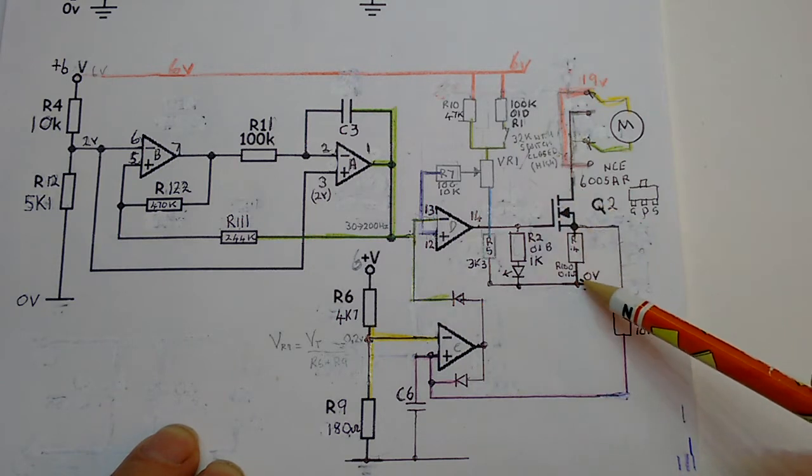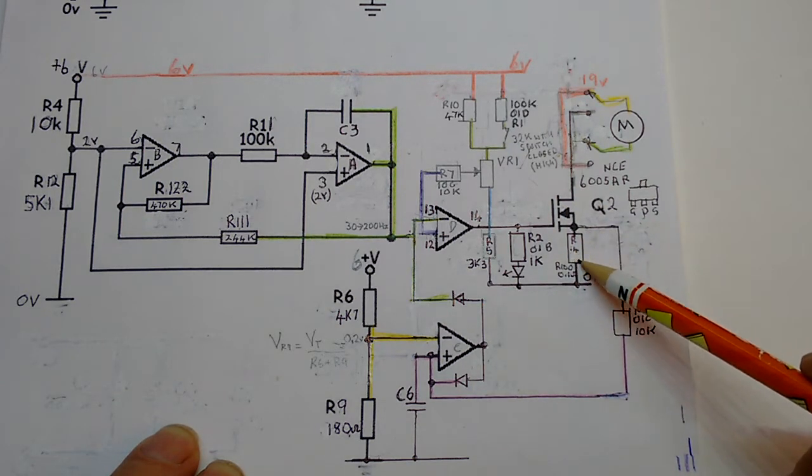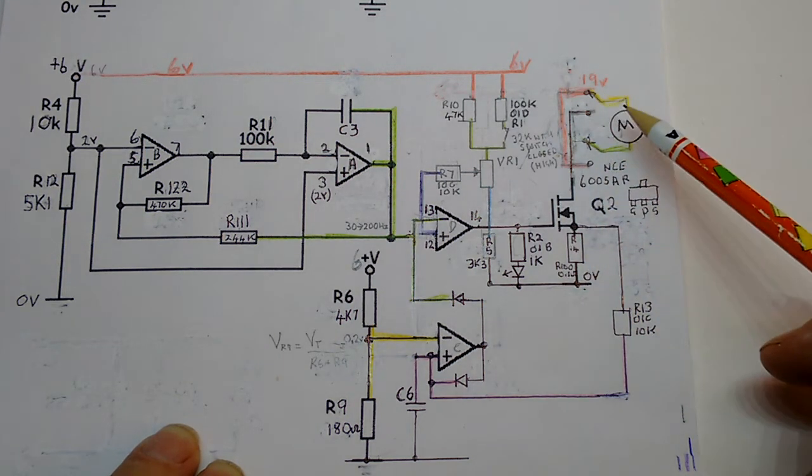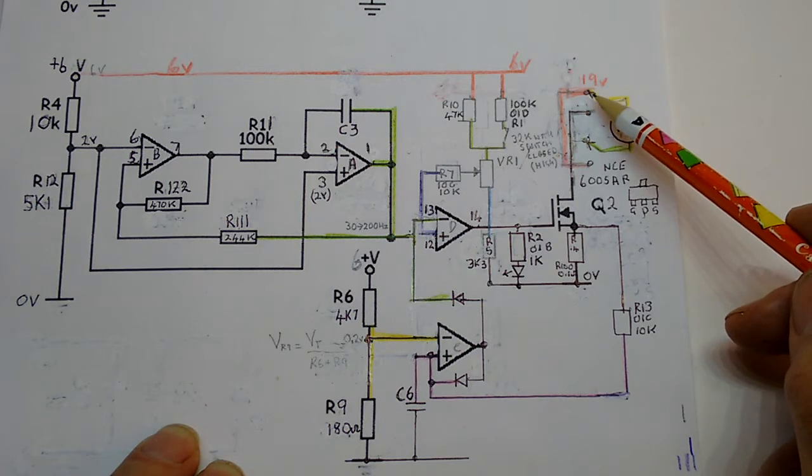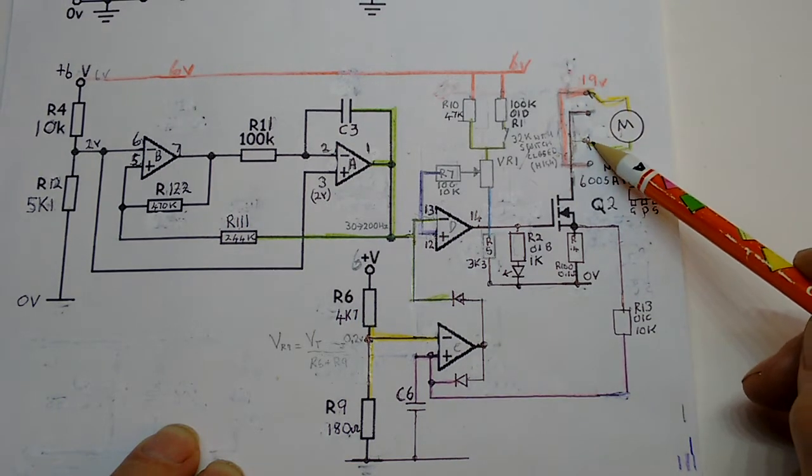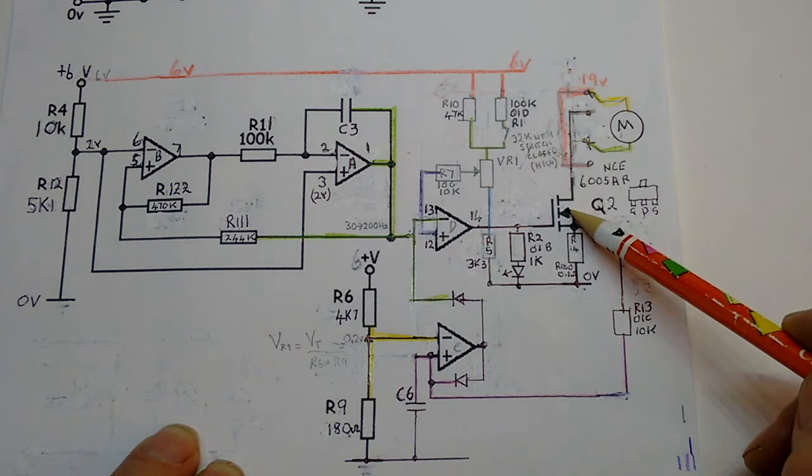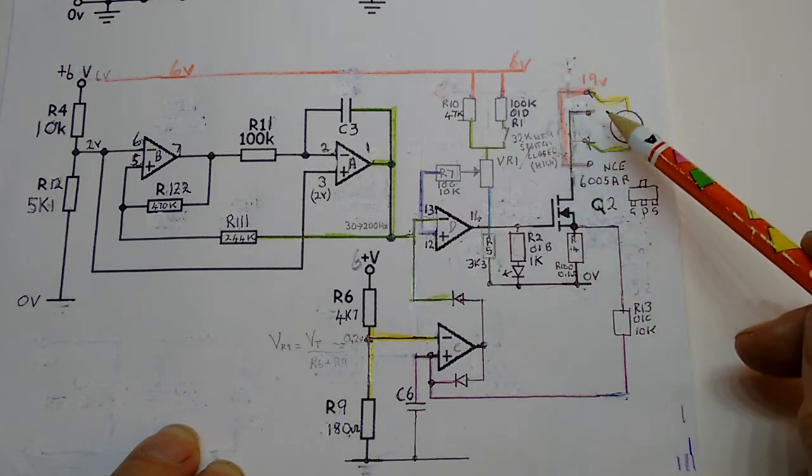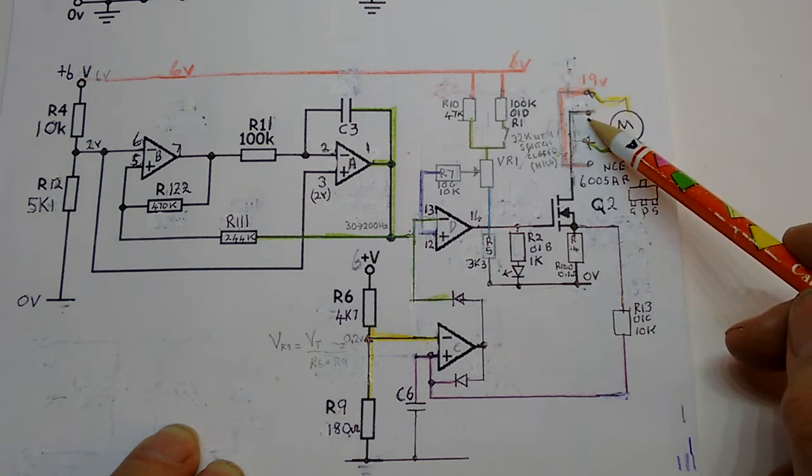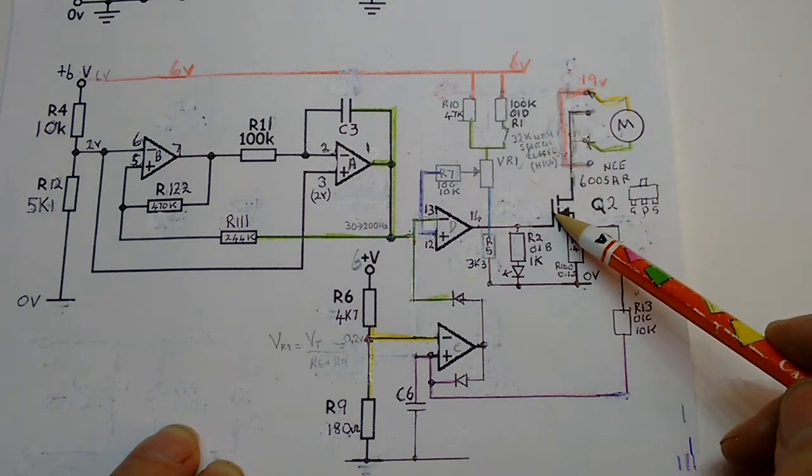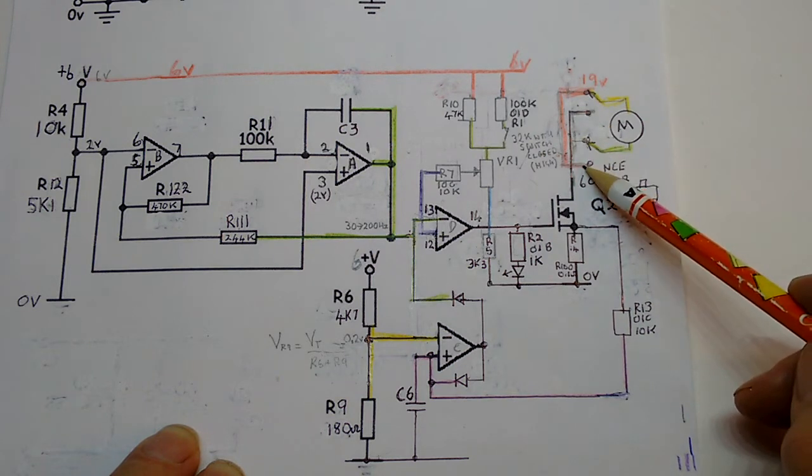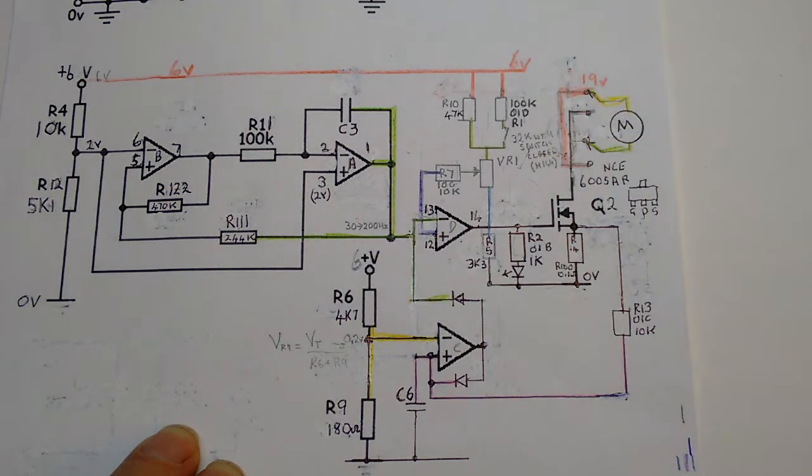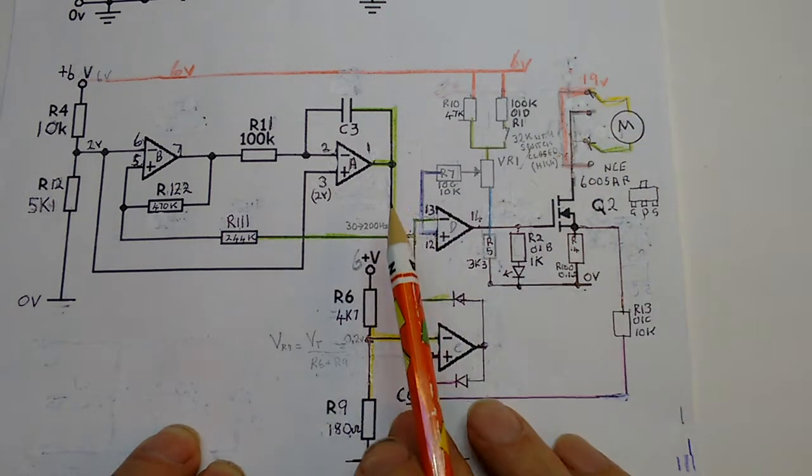So as it's there, the top yellow connection is to 19 volts. The green bottom one is to the FET which will connect it down to 0 volts. And if I change the direction, the yellow wire at the top comes down onto the 0 volt rail and the green rail comes onto the 19 volt rail. So that's the changeover switch.